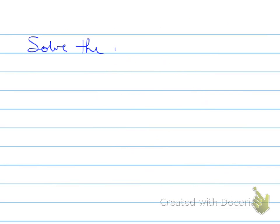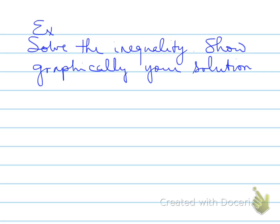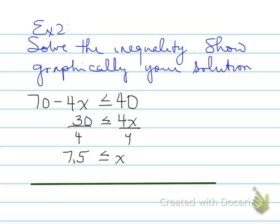Alright, next. Let's look at example 2. You're asked to solve the inequality and then show graphically your solution. You move so that the x is going to be positive. We try and do that as much as possible. And we divide both sides by 4 and we get x is greater than or equal to 7.5.